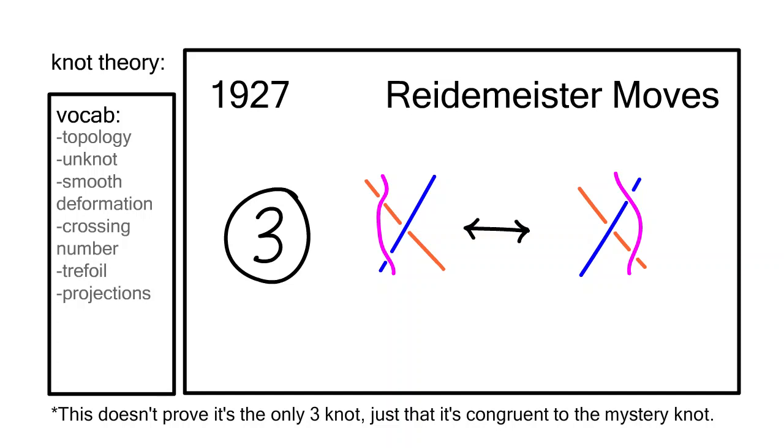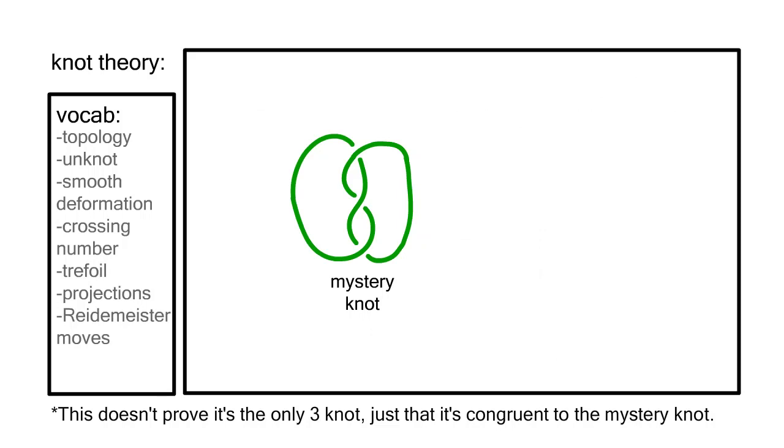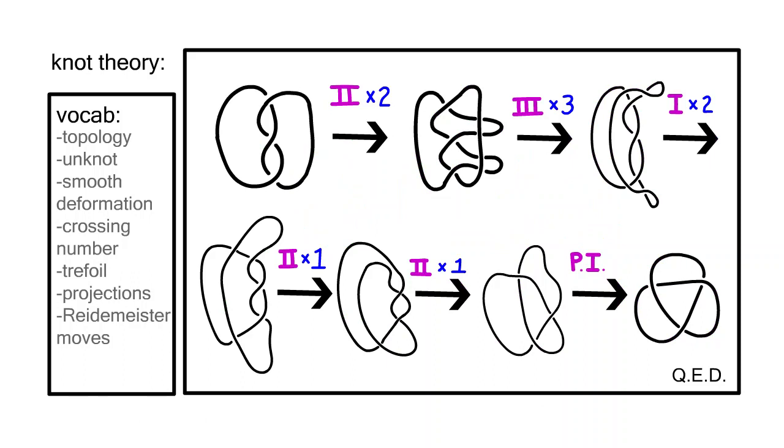Using these moves, we can diagram a proof showing that the mystery knot is really a different projection of the trefoil. This is one possible proof. In knot diagrams, we have to note which moves we use, how many, and draw the projections after each change.